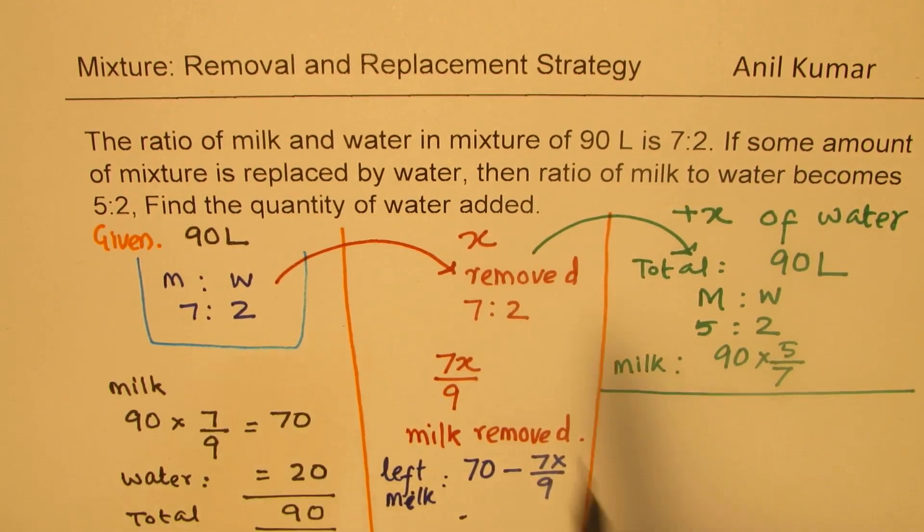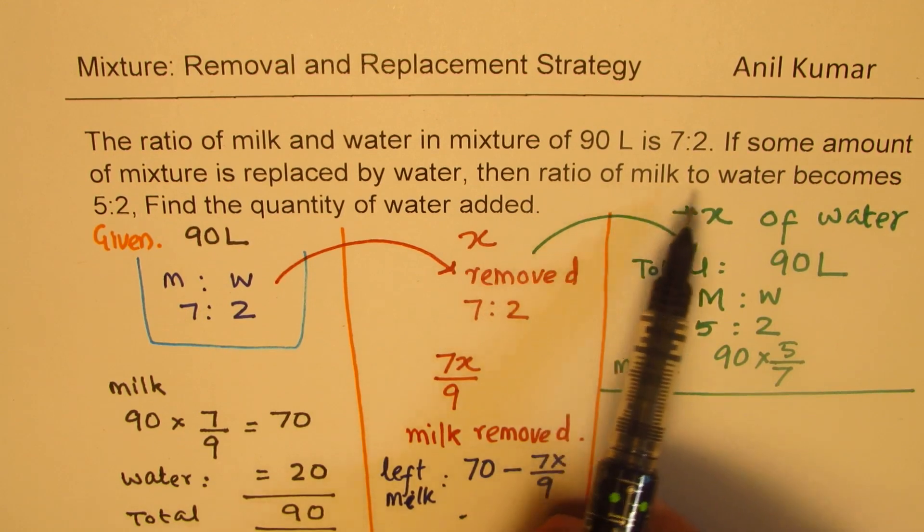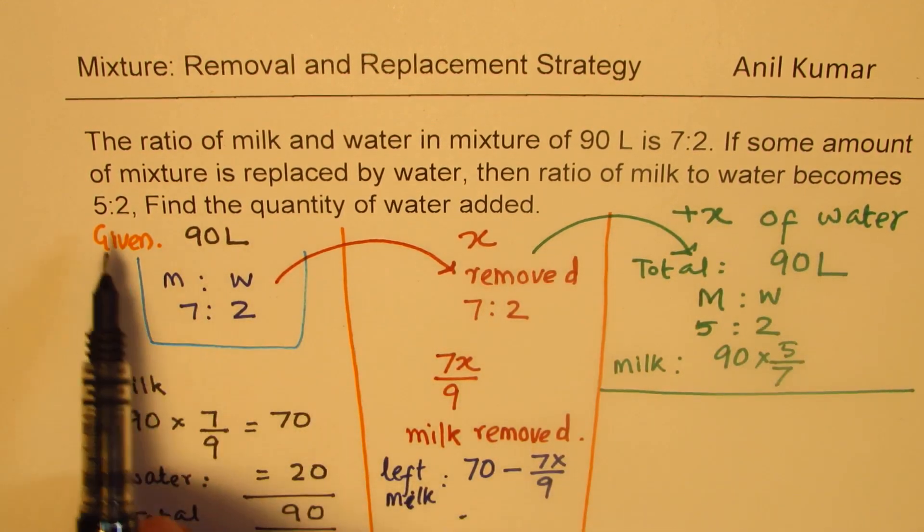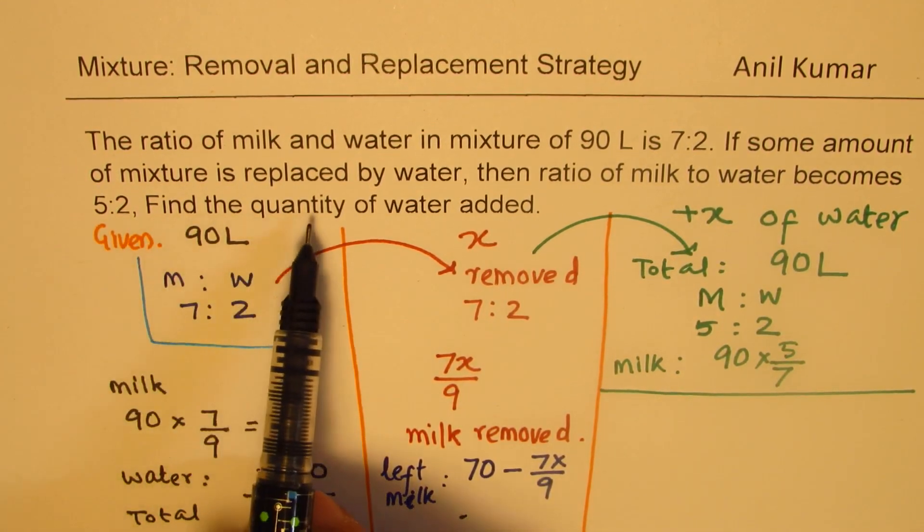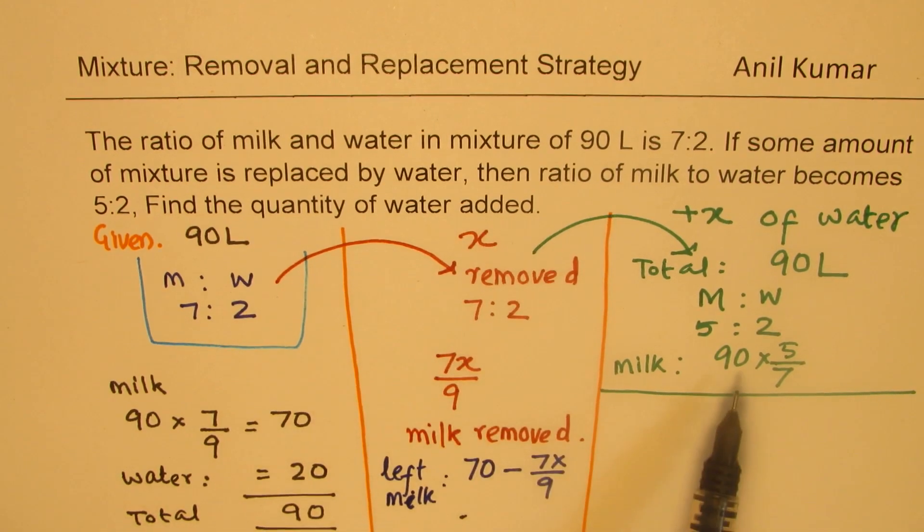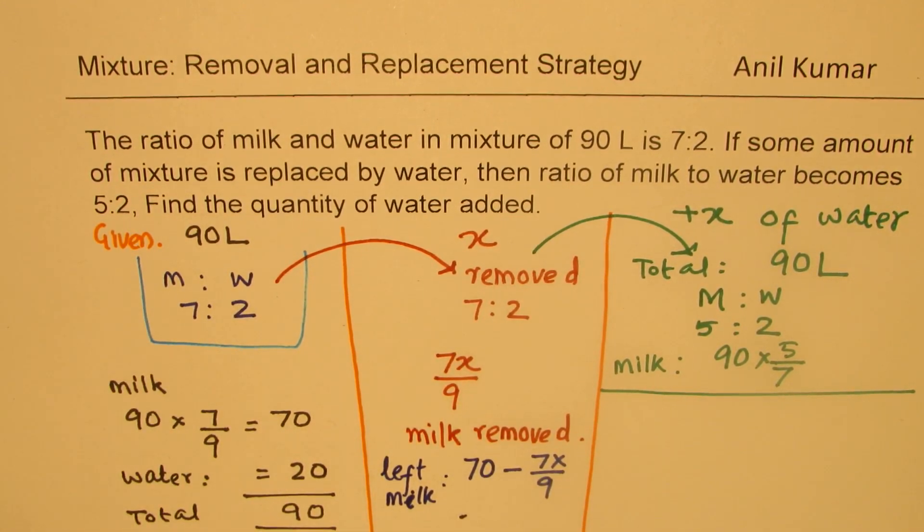The ratio of milk to water becomes 5:2. Now the quantity of milk is actually 70 minus 7x over 9, and that should be equal to this quantity. So that is the quantity left. So we can equate these two.